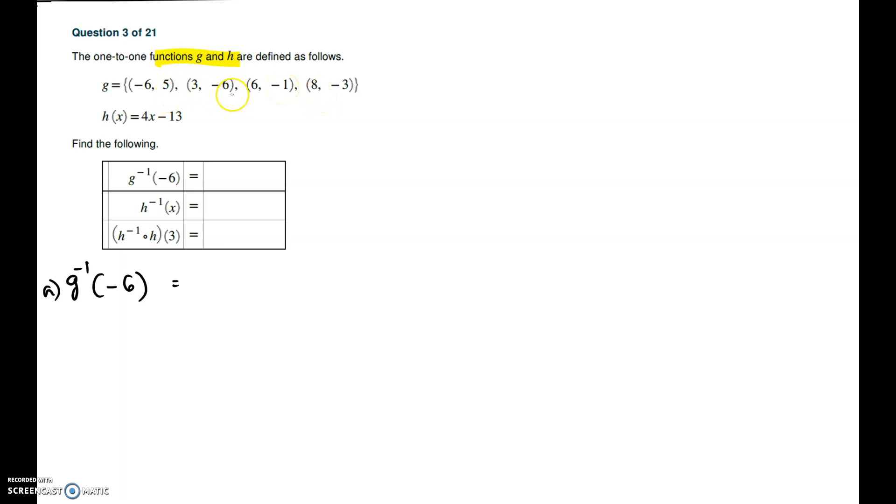Outputs are 5, -6, -1, -3. The question is asking us what is the x value corresponding to the y value -6. So the y value is -6 and the x value corresponding to that is 3. So g inverse of -6 is 3.